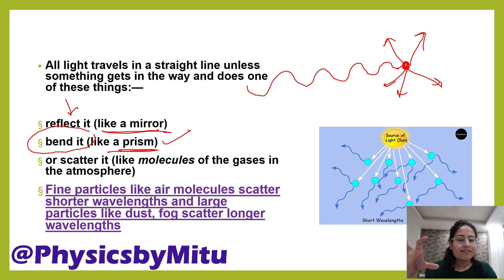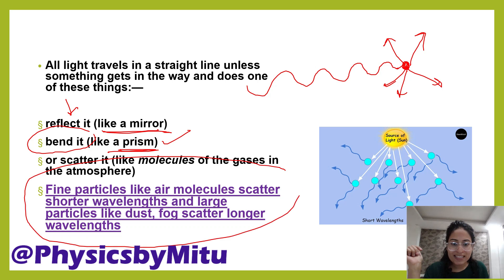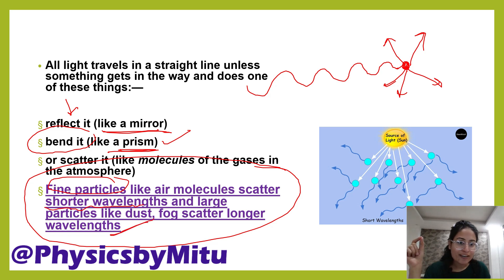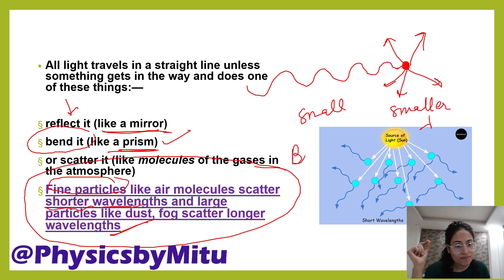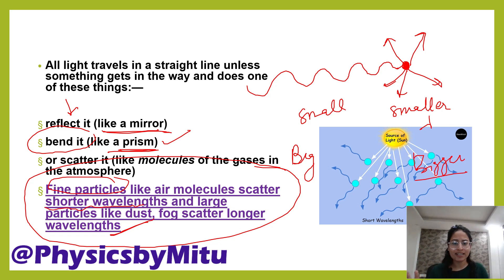Which color gets scattered depends on the size of the particle — this is the golden rule. Small particles scatter shorter wavelengths, and large particles scatter longer wavelengths. Whatever light falls on the particle, the size of the particle determines which color and which wavelength will be scattered.